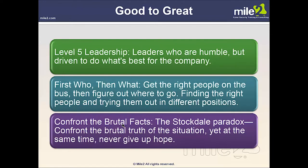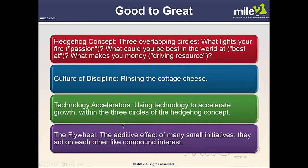From Good to Great — level five leadership describes leaders who are humble but driven to do what's best for the company. First who, then what: get the right people on the bus, then figure out where to go — find the right people and try them in different positions. Confront the brutal facts — the Stockdale Paradox: confront the brutal truth of the situation, yet never give up hope. The hedgehog concept involves three overlapping circles: what lights your fire (passion), what could you be best in the world at, and what makes you money (your driving resource).